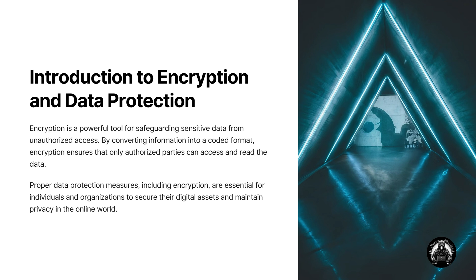Introduction to Encryption and Data Protection: Encryption is a powerful tool for safeguarding sensitive data from unauthorized access. By converting information into a coded format, encryption ensures that only authorized parties can access and read the data. Proper data protection measures, including encryption, are essential for individuals and organizations to secure their digital assets and maintain privacy in the online world.